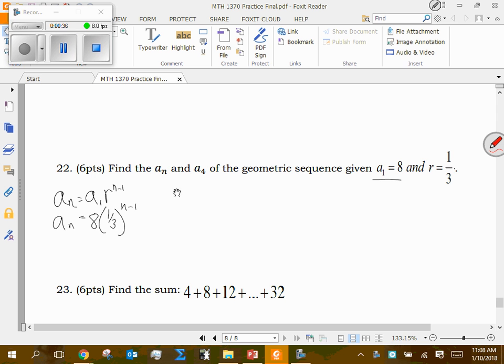Now it wants the fourth term, so let's just say a sub 4 is equal to 8 times 1/3 to the power of 3, which is 8 times 1/27th, so 8/27ths is that fourth term. So if I were to start with 8 and then multiply that by 1/3, I get 8/3rds, and then I multiply that by 1/3, I get 8/9ths, and then I multiply that by 1/3 again, I get 8/27ths. So we do see that the fourth term using formulas is 8/27ths, but using chronology and creating sequence is also 8/27ths.